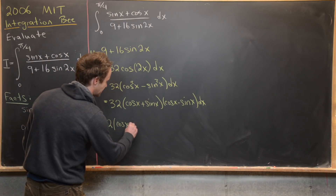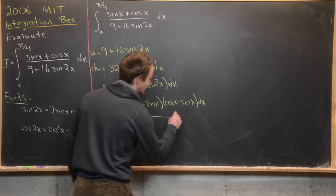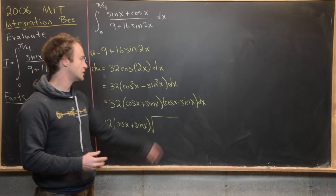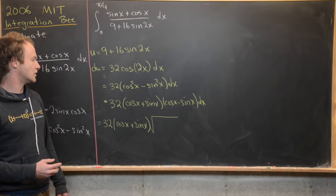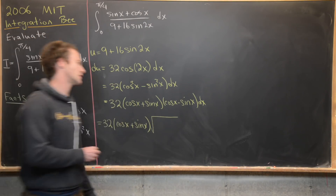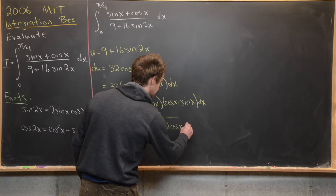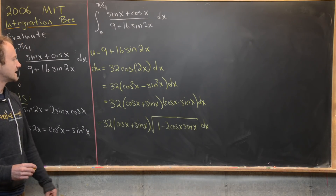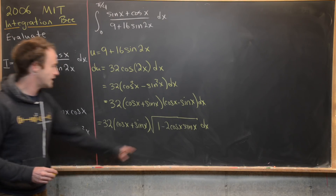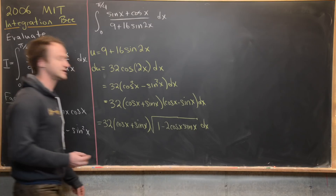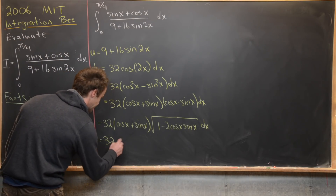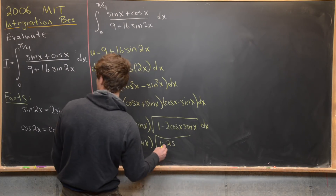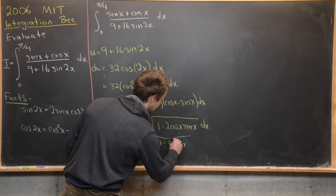Since we're on the interval 0 to pi over 4, cosine is always bigger than sine, so we don't need absolute values. We have 32 times cosine x plus sine x times the square root of cosine squared plus sine squared minus two cosine x sine x — that's 1 minus 2 cosine x sine x. And since two cosine x sine x equals sine 2x, this simplifies to 32 times cosine x plus sine x times the square root of 1 minus sine 2x, times dx.